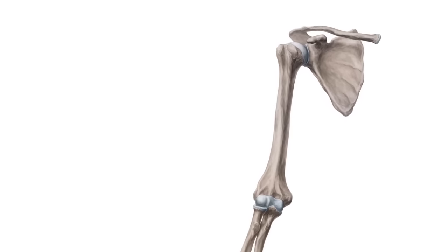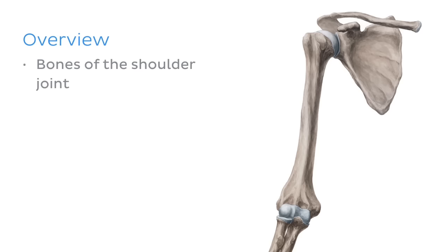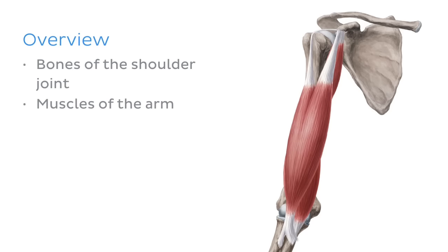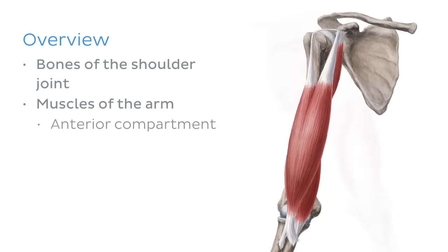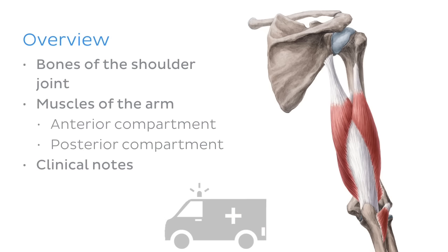Now that we've got the terminology down, let me give you a quick overview of what we're going to be talking about in this tutorial. First, we're going to be looking at the bones that make up the shoulder joint, as they form the bony framework that our muscles are attached to. Then we'll look at the muscles of the arm, divided into the anterior compartment and the posterior compartment. As we talk about each muscle, we'll learn about their origin, insertion, function, and innervation. Finally, we'll conclude with some clinical notes.